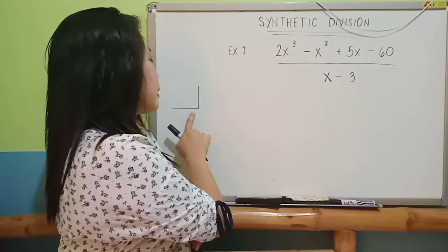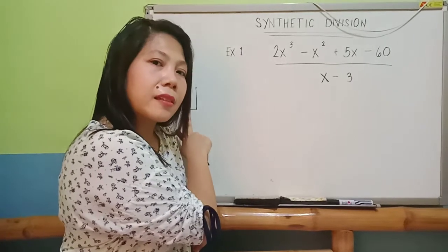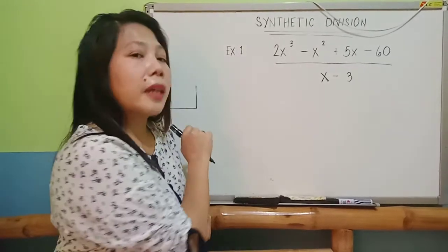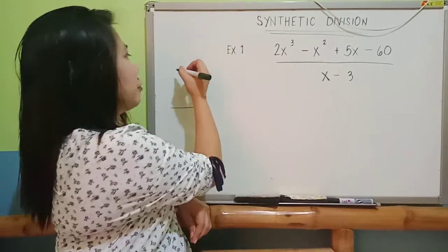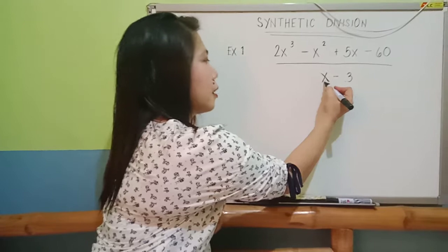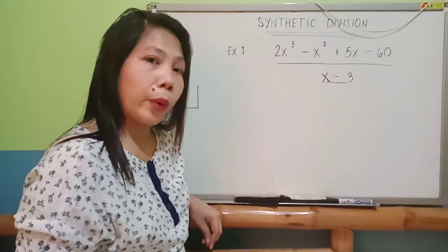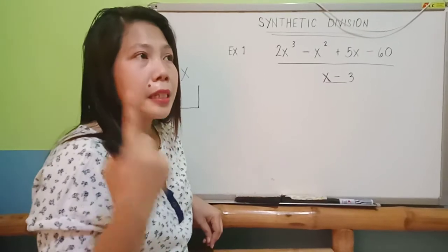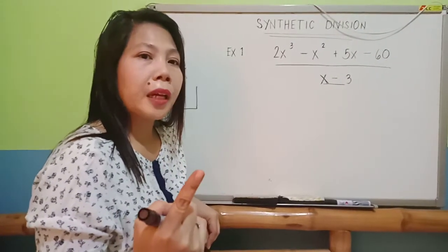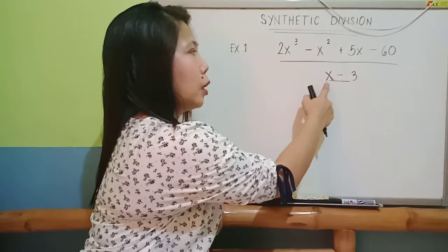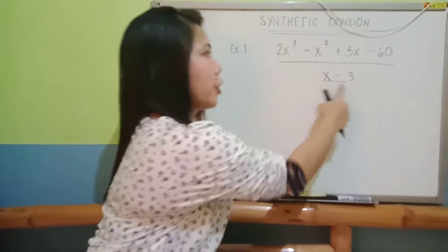This is the place where you're going to place the value of your x. Where are you going to get the value of your x? You're going to get the value of your x from your divisor here. How are we going to get the value of our x? Simply, you have to think of a number that when you plug into your x, you will get a 0 on your equation.